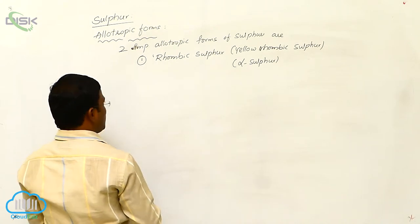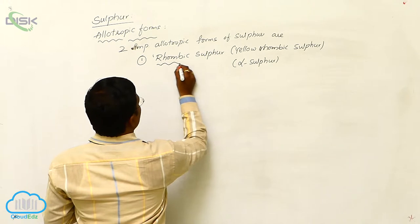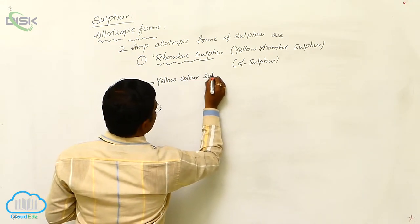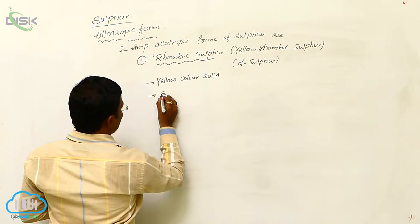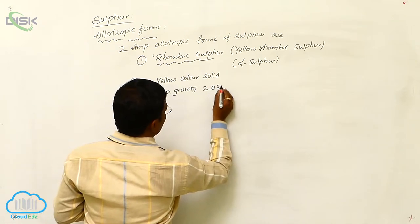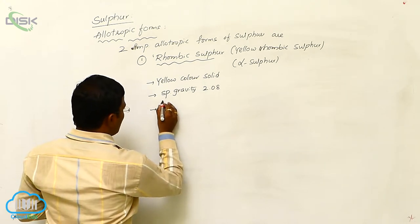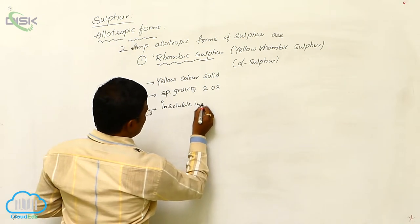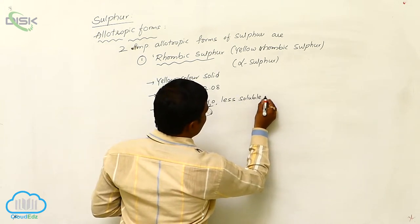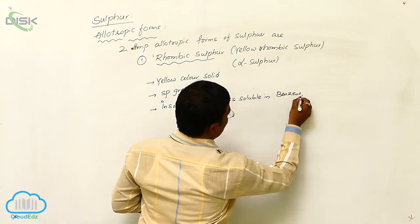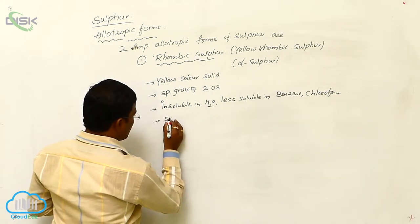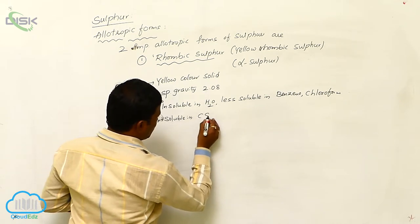Rhombic sulfur is a yellow color solid having a specific gravity of 2.08. It is insoluble in water and less soluble in benzene, chloroform, and CCl4.